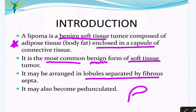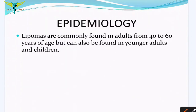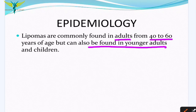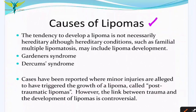Sometimes a lipoma may also become pedunculated — this is the peduncle and this can be the lipoma. Lipomas are commonly found in adults from age 40 to 60, but can also be found in younger adults and children. The tendency to develop a lipoma is not hereditary, but there are some hereditary conditions which may include lipoma development.